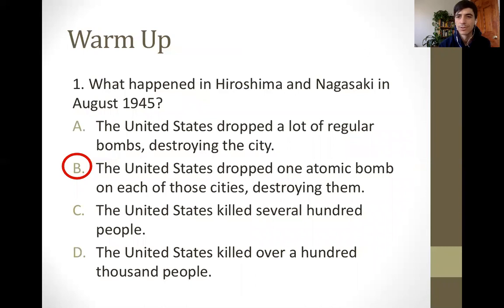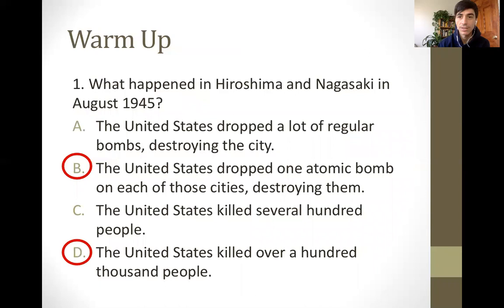Part of the government's logic was to show people what they had and that you shouldn't mess with the United States. These attacks were complete surprises — people didn't know the United States had this technology until it was used on Hiroshima and Nagasaki. The consequence is that over a hundred thousand people were killed. Estimates vary, but basically between 100,000 and 200,000 people were killed — some right away, and many slowly over time from the radiation released by the bombs.